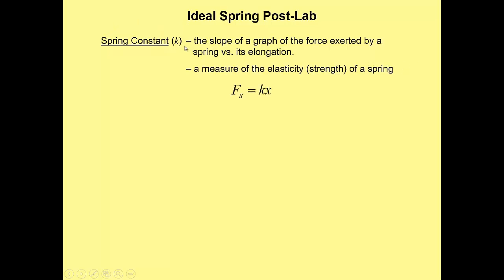So, if we plug that k in for the slope that we actually got, we get the force exerted by the spring is equal to the spring constant times its elongation. Or, by the way, compression. Ideal compression springs work the same way. I just didn't have any of those for lab.